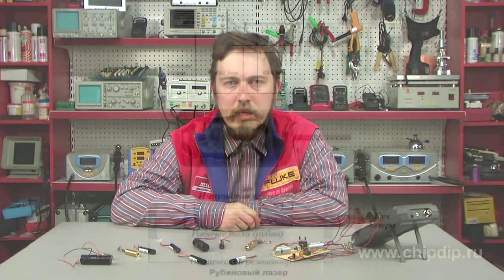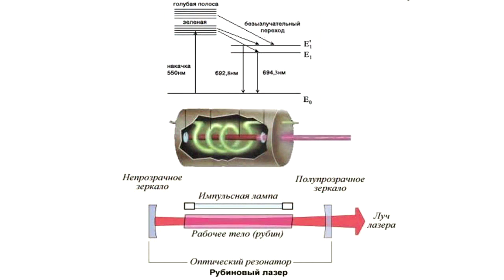The second important part of a laser is an active operating medium. It absorbs pumping energy and re-emits it as coherent radiation. Presently, all aggregation states of matter are used as the laser's operating medium: solid, liquid, and gaseous state, and even plasma. The third part of a laser is an optical resonator — a system of mirrors which can excite electromagnetic waves of the optical range. The optical resonator ensures a regenerative feedback in lasers.